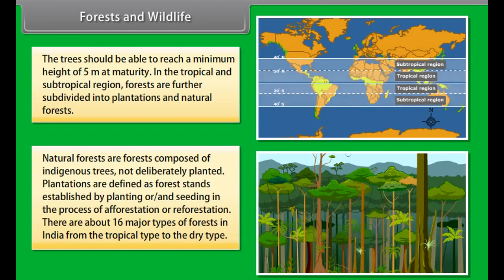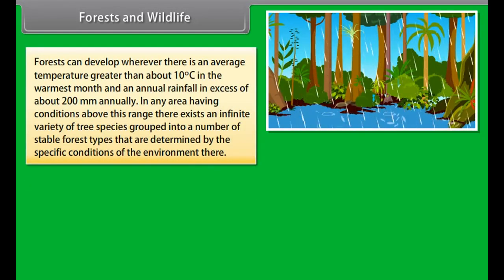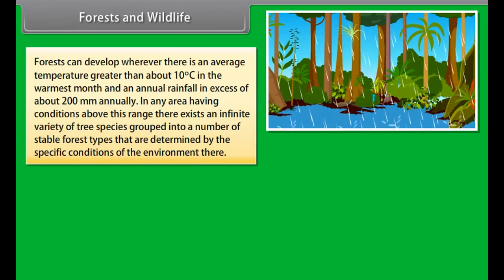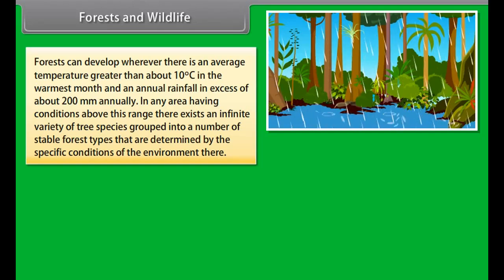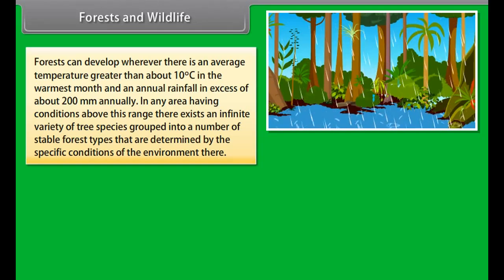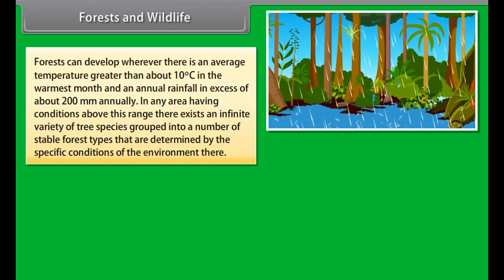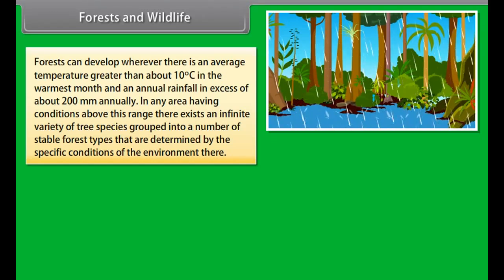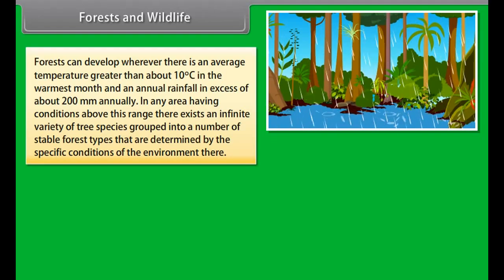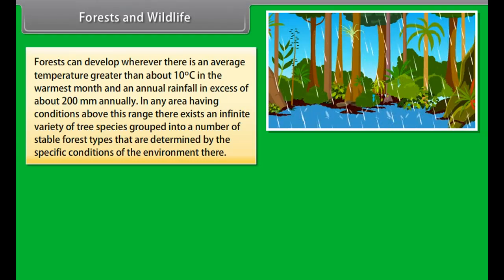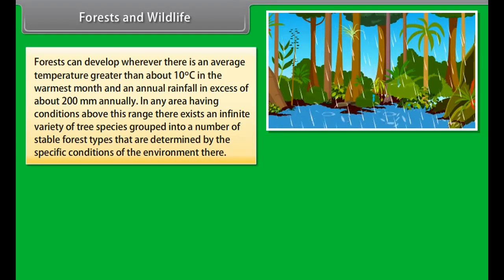The trees should be able to reach a minimum height of 5 meters at maturity. In the tropical and subtropical region, forests are further subdivided into plantations and natural forests. Natural forests are forests composed of indigenous trees, not deliberately planted. Plantations are defined as forest stands established by planting or seeding in the process of afforestation or reforestation. There are about 16 major types of forests in India from the tropical type to the dry type.